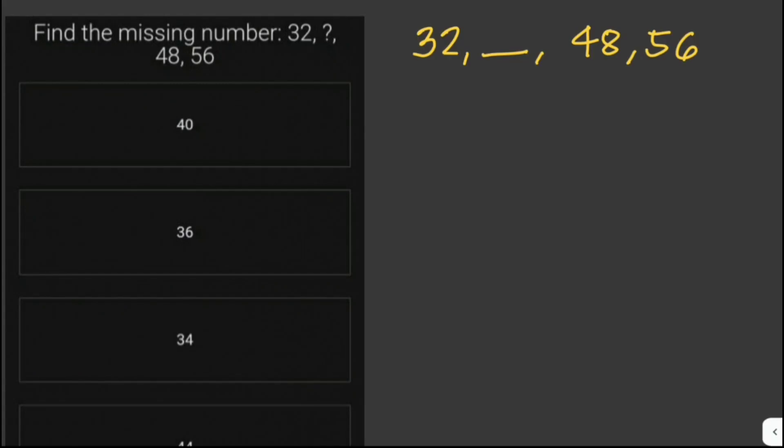Find the missing number: 32, ?, 48, 56. We're given here an arithmetic sequence with a common difference of 8. We have the first, third, and fourth numbers in the sequence. We just have to find the second number.